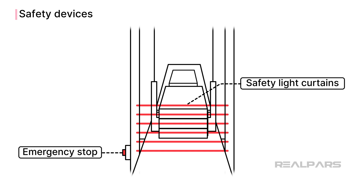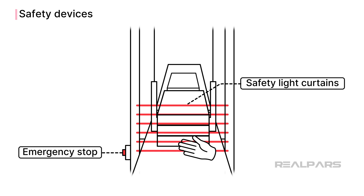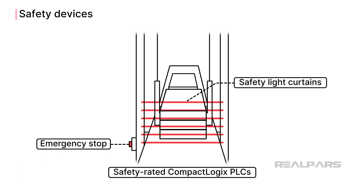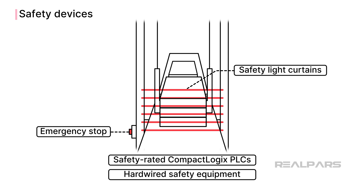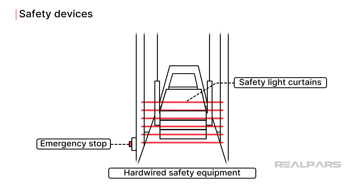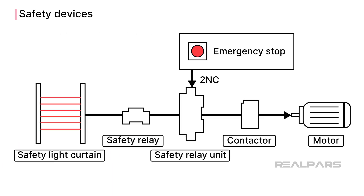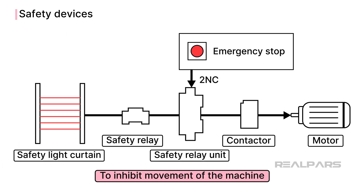Finally, safety devices are used to ensure that the machine can stop safely in case of an emergency. Although there are safety-rated CompactLogix PLCs available, mid-size machines like this one often use hardwired safety equipment. With hardwired safety, the PLC doesn't control the safety logic. Instead, safety devices like emergency stops and safety light curtains are connected to safety relays, which inhibit movement of the machine when a safety event has occurred.